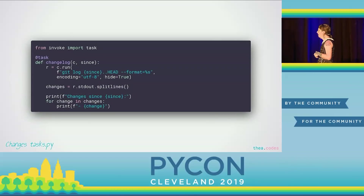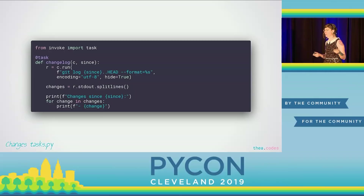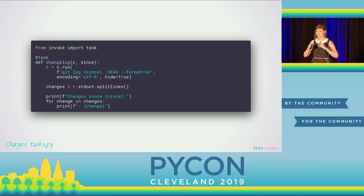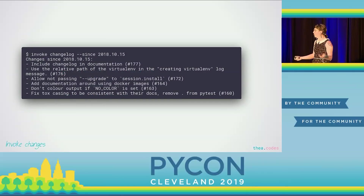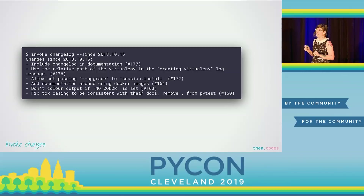Another one I use all the time: I release a lot of packages, and when you release packages it's nice to put together a changelog to tell people what changed between versions. What this task does is use Git to figure out the difference between the last release and the current release, and print it out in a nice format that can be easily copied and pasted into a changelog. Of course, you could take this concept even further and have Invoke actually update the changelog file for you.